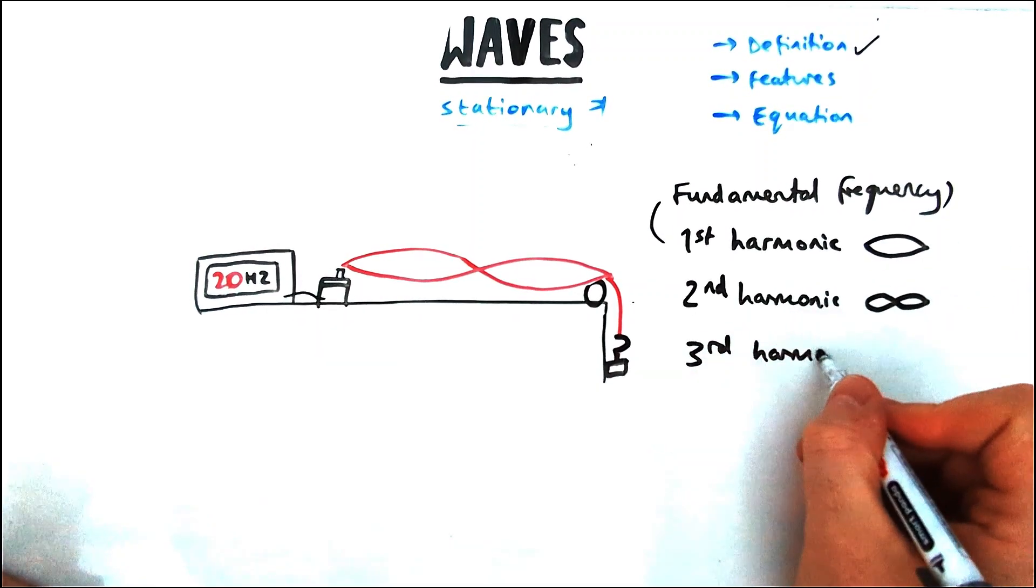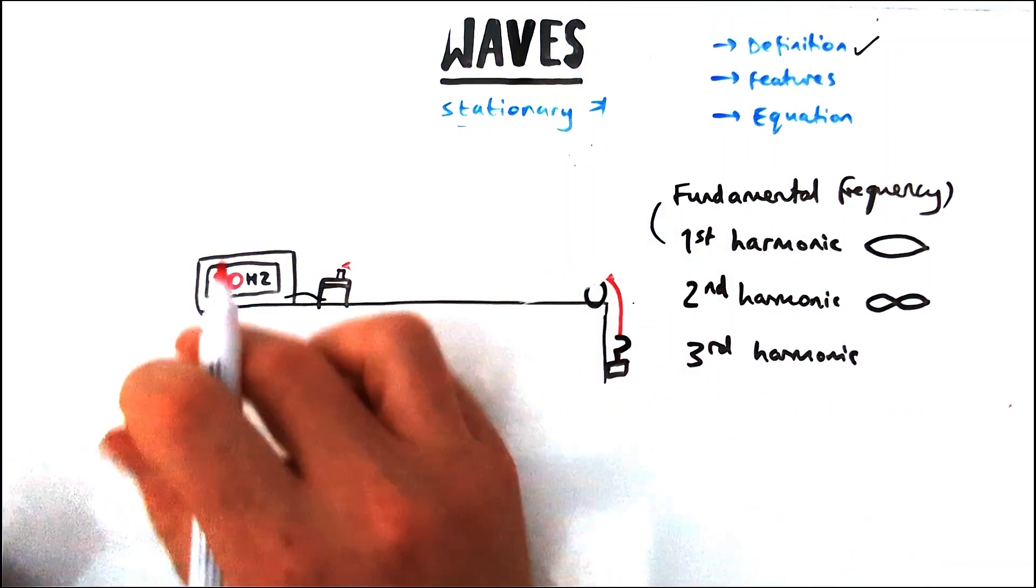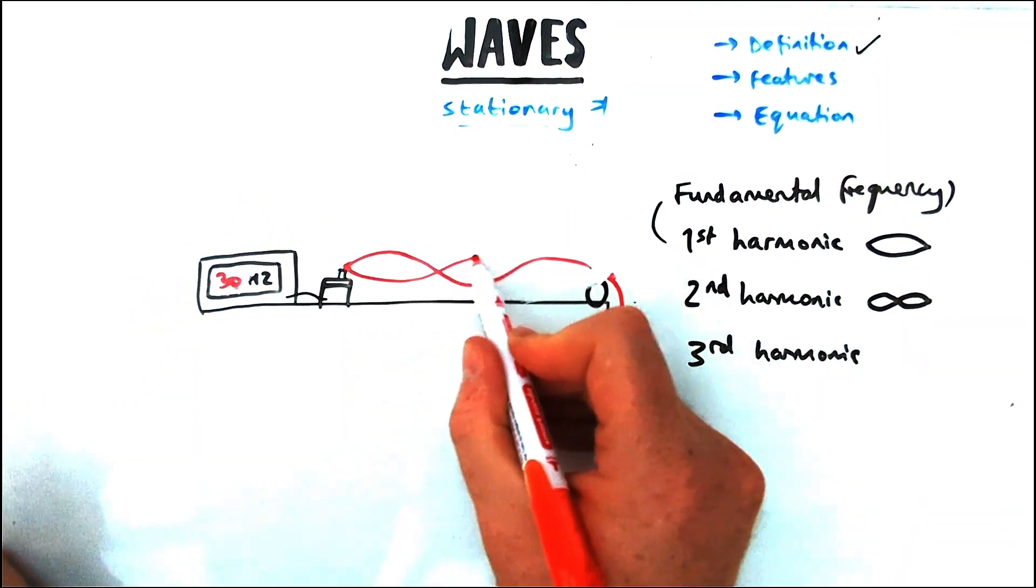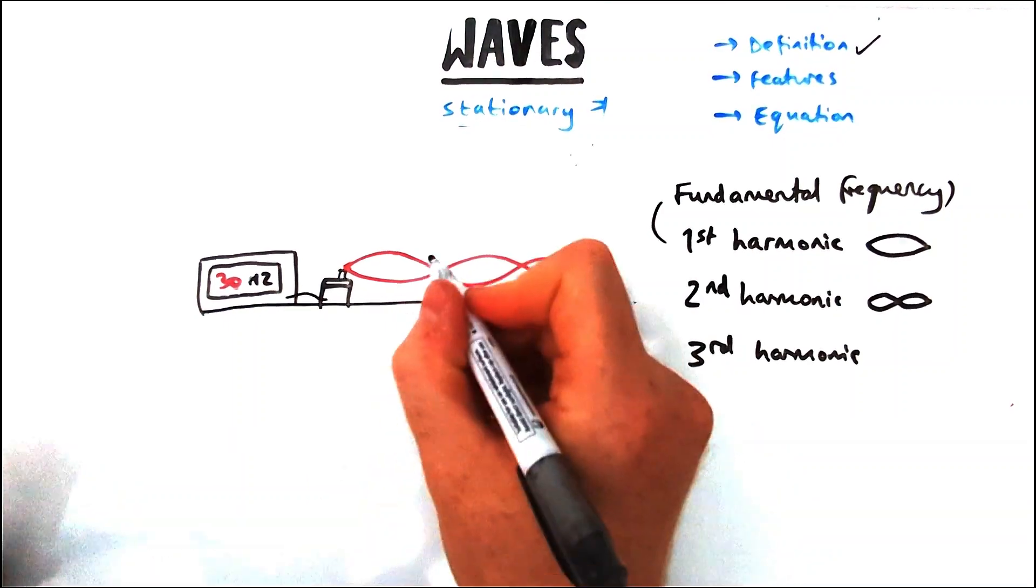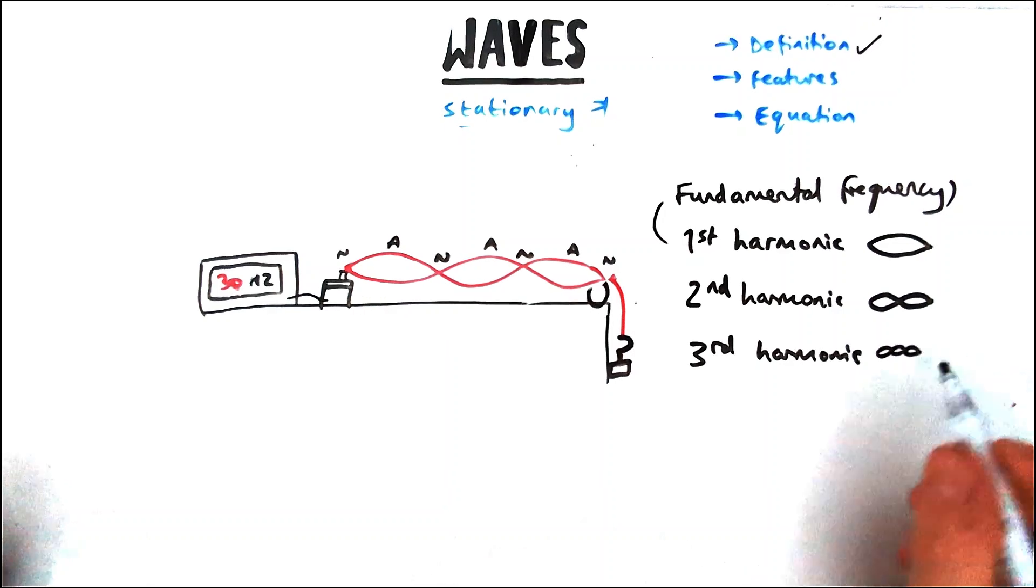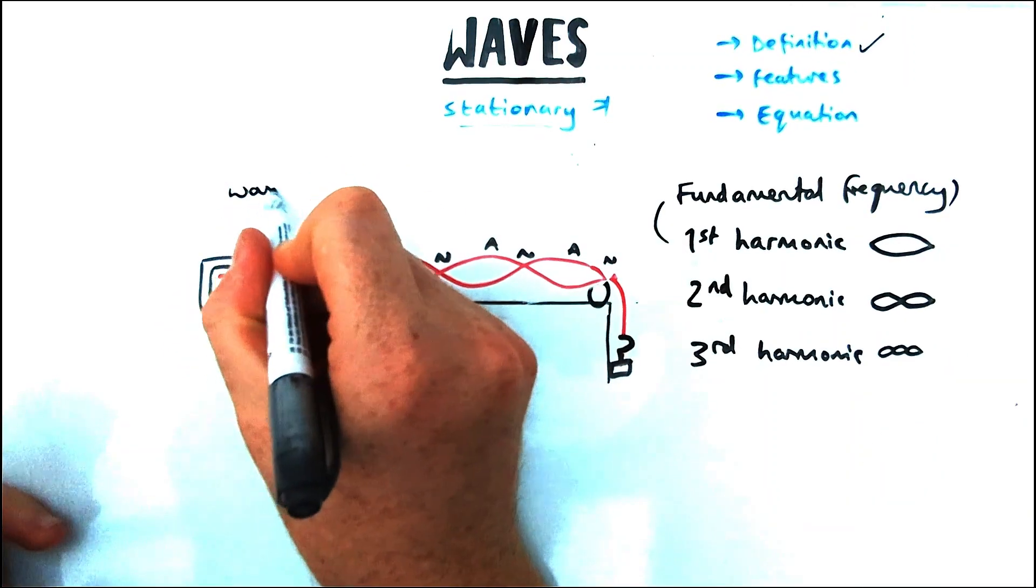I've got three antinodes, I've got five nodes because I've got one at each end as well. You could go on with this, you could talk about the fourth harmonic, fifth harmonic, etc. But each time you need to be aware of how many wavelengths there are on the piece of string.